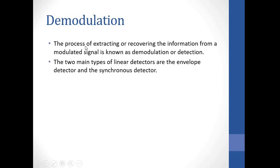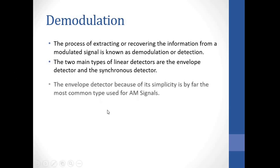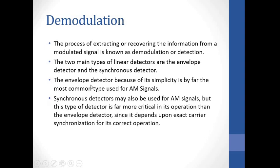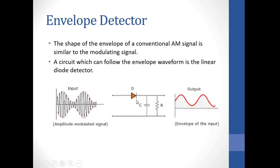The process of extracting or recovering the information signal is called demodulation, also called detection or discrimination. For conventional AM, you can use an envelope detector — a diode with a capacitor and resistor. It is very simple, which is an advantage of conventional AM because the receiver will be very simple. It follows the modulation of the input signal to produce the output signal.